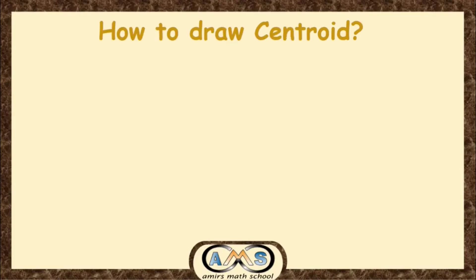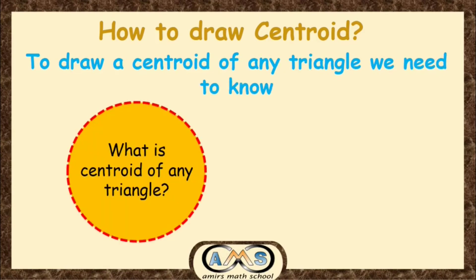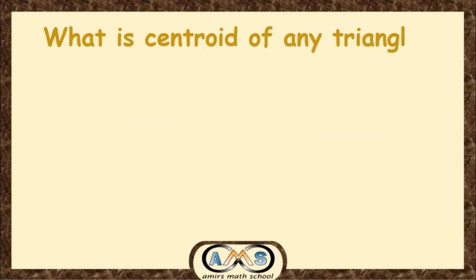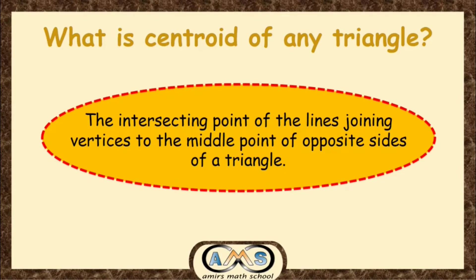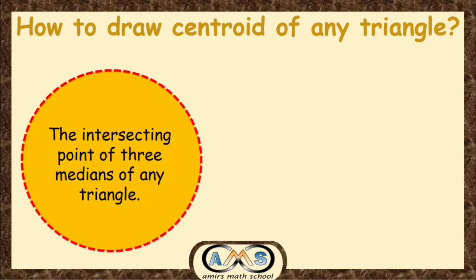Now let's see how to draw the centroid of any triangle. To draw the centroid, we need to know what the centroid is and how to draw the midpoint of any side. The intersecting point of the line joining each vertex to the midpoint of the opposite side — that is, the median of the triangle — is known as the centroid. The intersecting point of the three medians of any triangle is the centroid.